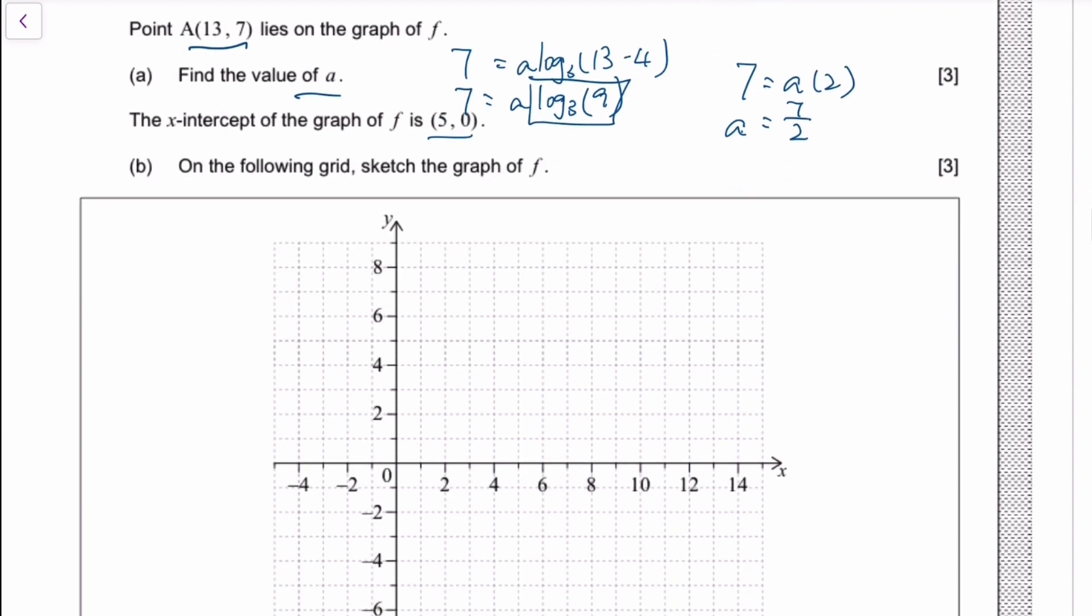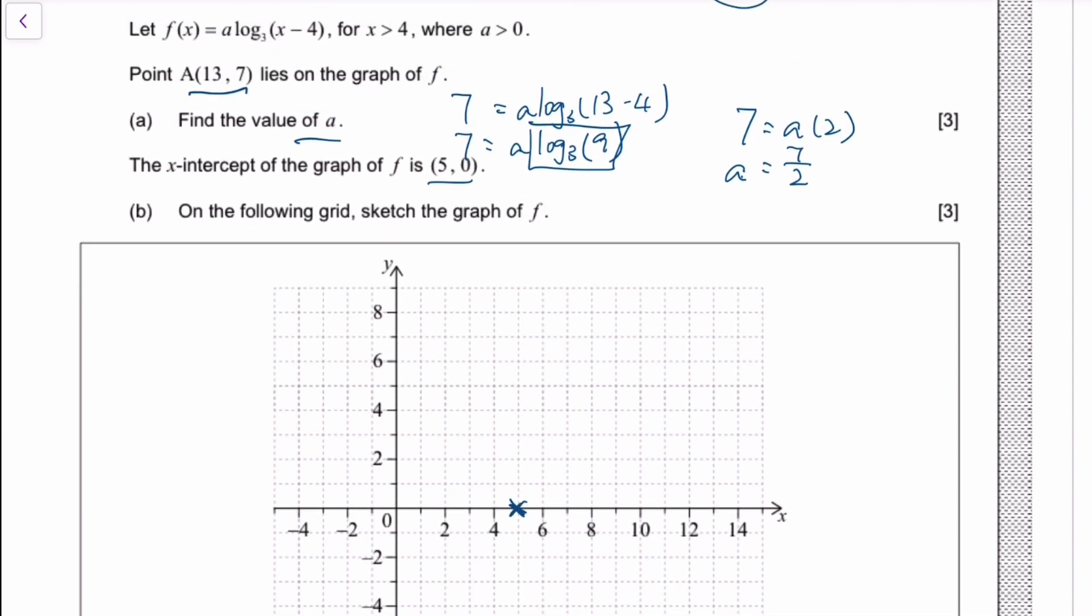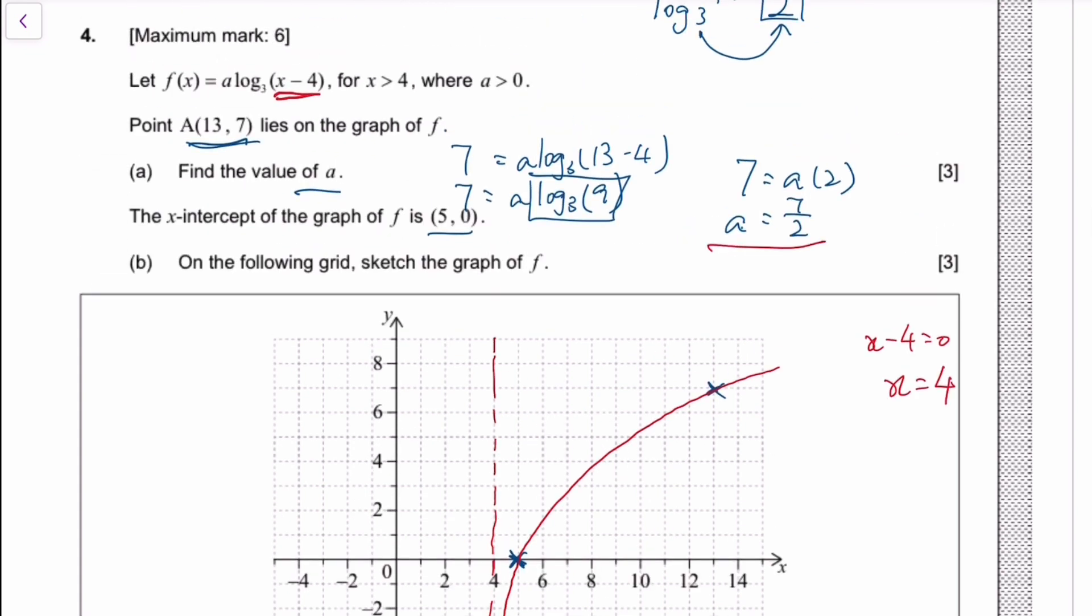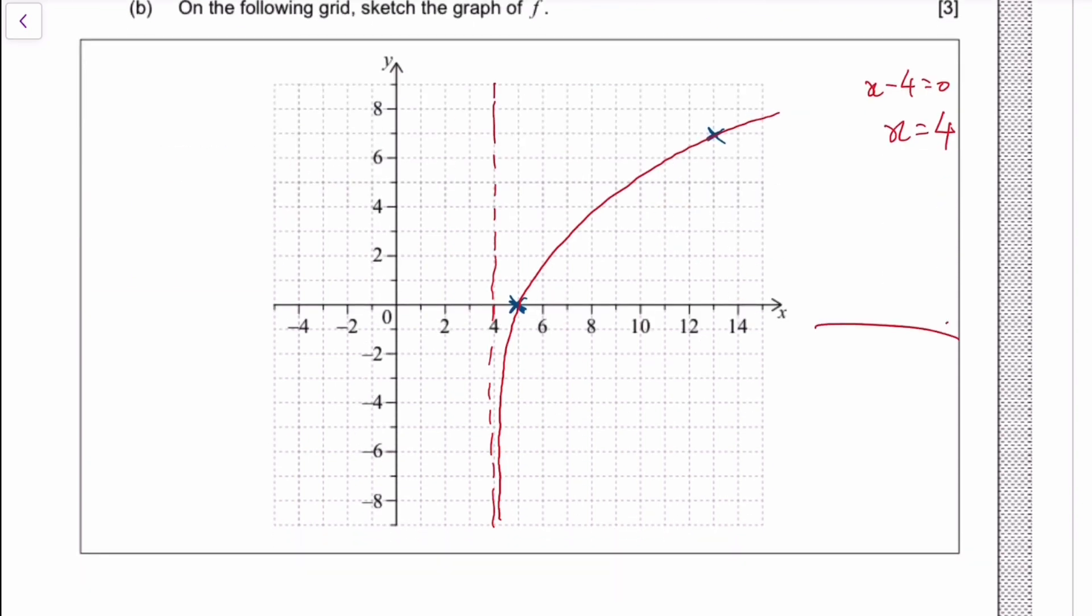So log 9 base 3 you should know is 2. The reason is log 9 base 3 is asking you 3 to the power of what would give you 9. Therefore a would be 7 over 2. The target x-intercept is 5, 0. The graph needs to pass through 5, 0 and through 13, 7. The only thing you also need to know is the vertical asymptote of log. In simple terms, the vertical asymptote of a log is when the thing inside the log equals 0. So when x minus 4 equals 0, x would equal 4. The vertical asymptote is at 4. You should know the shape of a log graph looks like this when the base is bigger than 1.